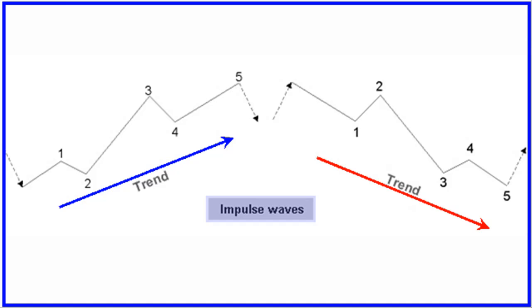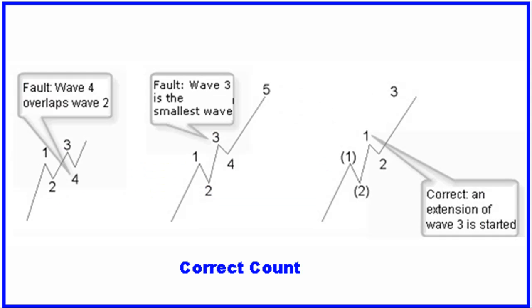Wave 2 cannot move beyond the start of wave 1. Wave 3 is an impulse wave and is never the smallest wave. Wave 4 can be any type of correction pattern, and waves 2 and 4 are not overlapping. Wave 5 is an impulse wave, or an ending wedge impulse wave. A correct count is, of course, of utmost importance.